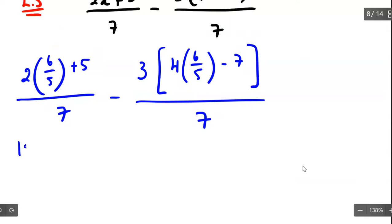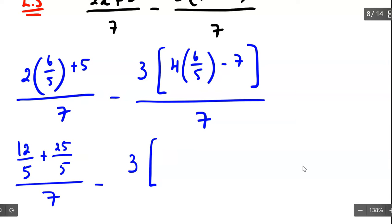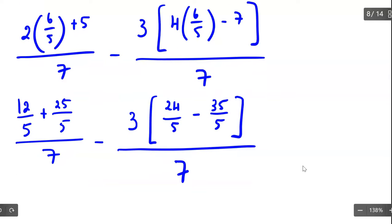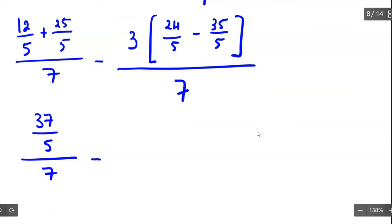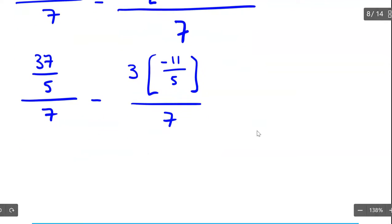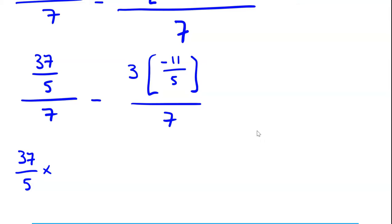Now I'm going to multiply this in and at the same time take common denominators, converting to a common denominator so I can add or subtract these fractions. This should give me 37 over 5, the whole thing divided by 7, subtract 3 multiplied by negative 11 over 5, the whole thing divided by 7. So we get 37 over 5 divided by 7 for the first one.